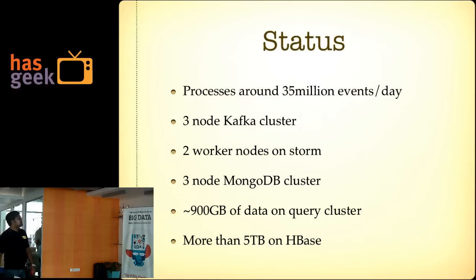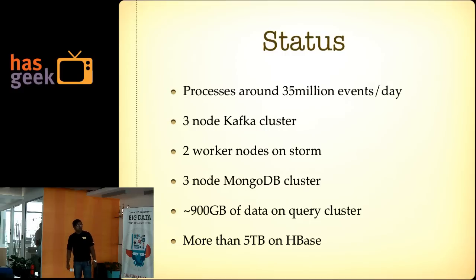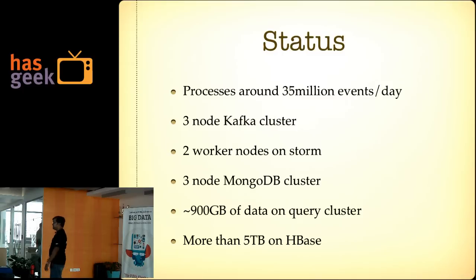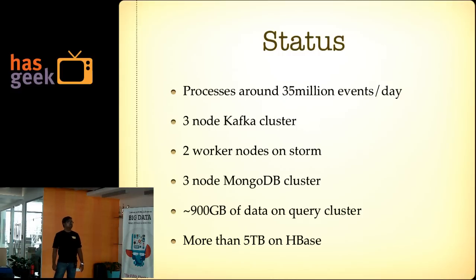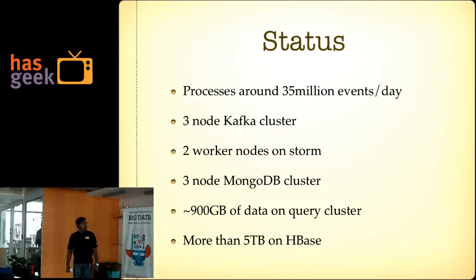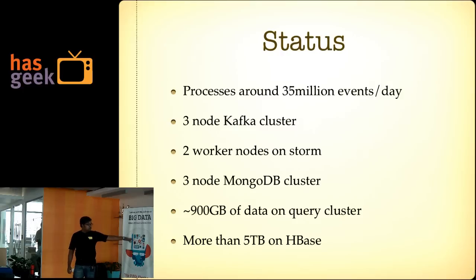The current status: Hyperion takes around 35-40 million events per day. We have a 3-node Kafka cluster, 2 worker nodes on Storm, a 3-node MongoDB cluster with around 900GB of data, and about 5-6TB of data on HBase. We are doing a fairly large amount of upscaling — events will go up 5-6 times. Kafka is becoming a 7-node cluster, Storm workers going from 2 to 4 to 8, MongoDB increasing to 6-7 nodes, query data will go to 3TB, and HBase will go up accordingly.